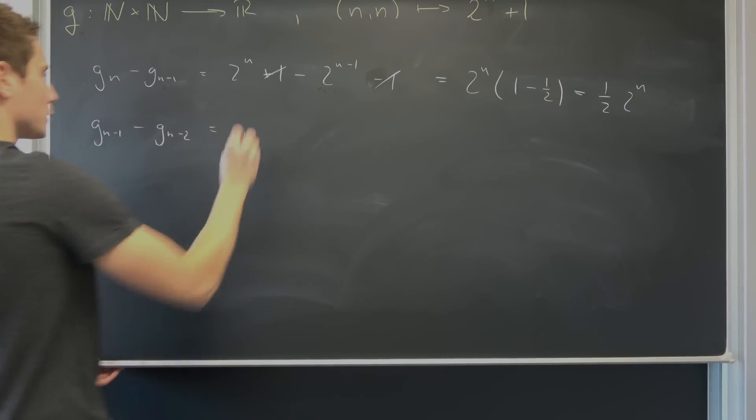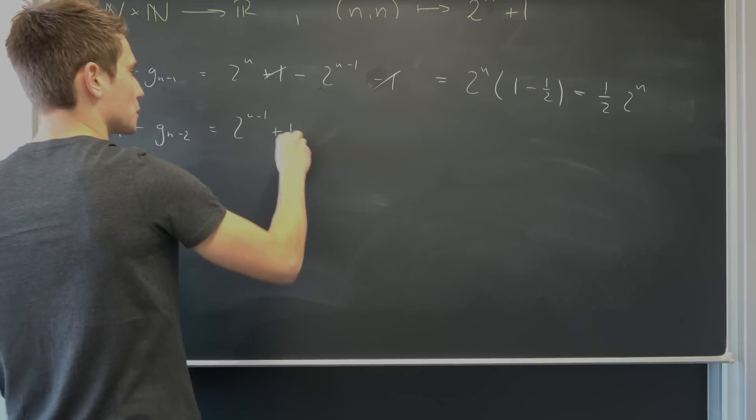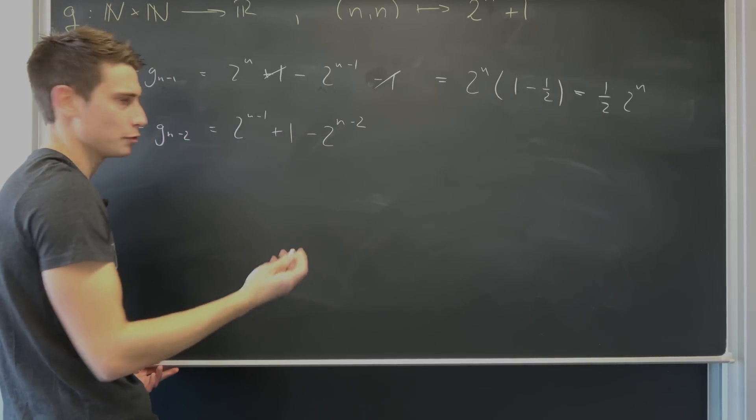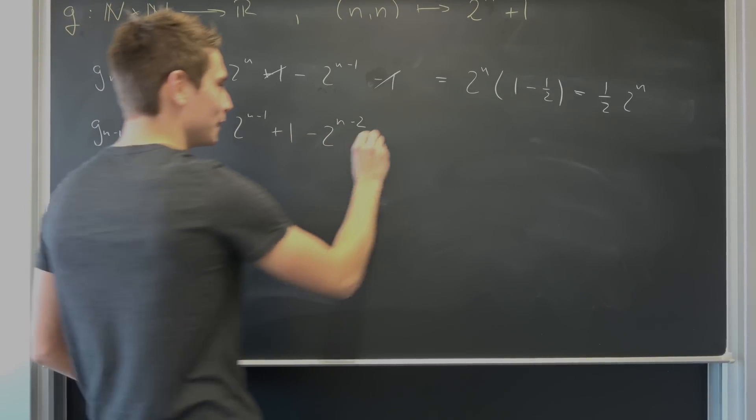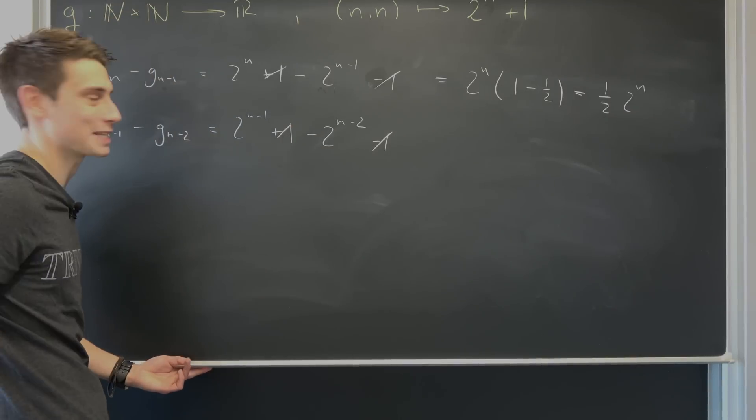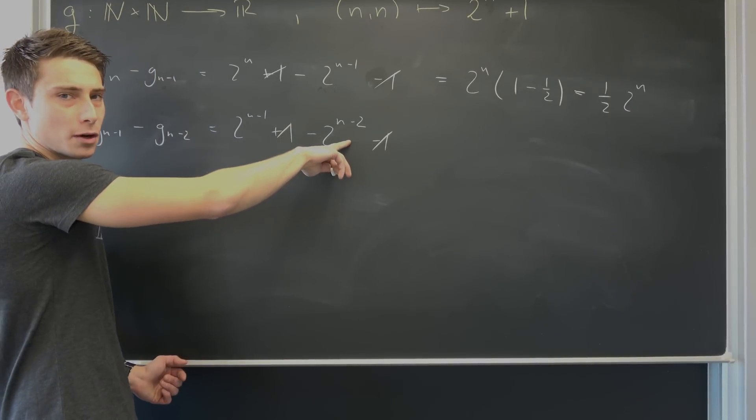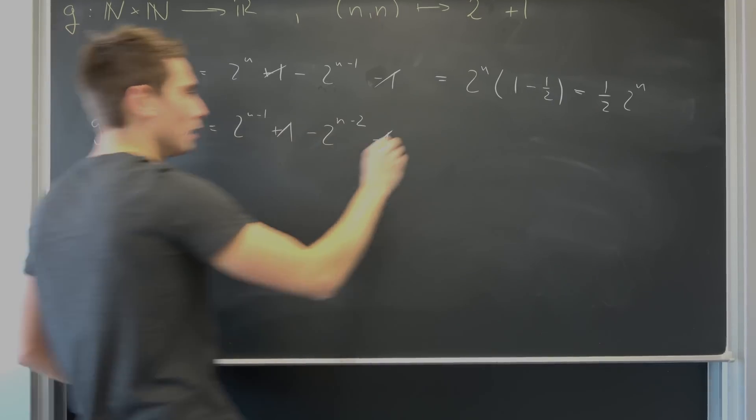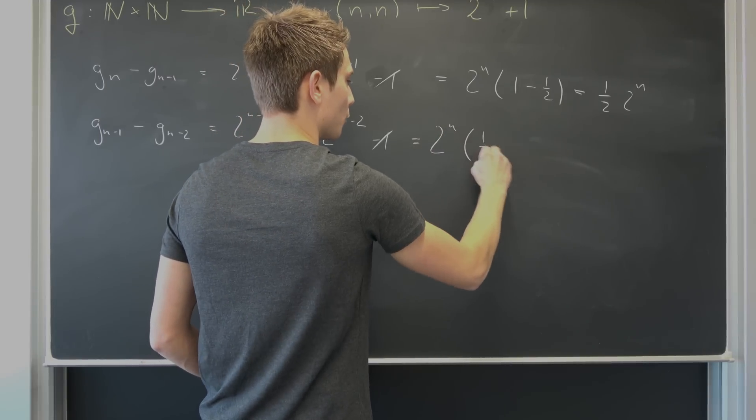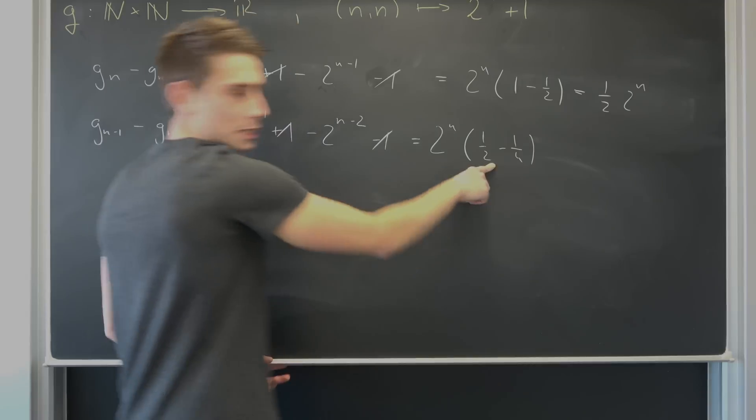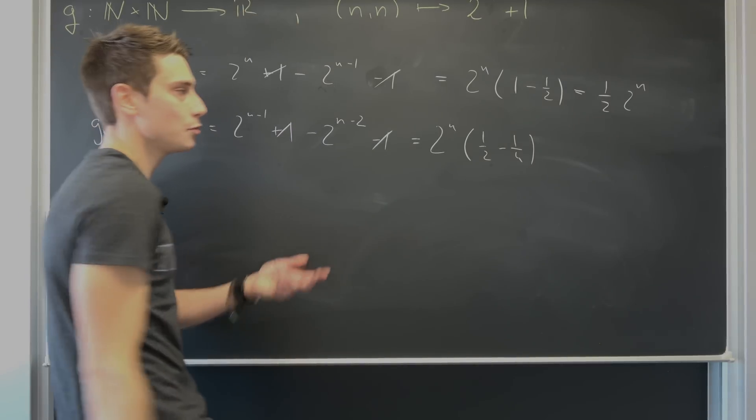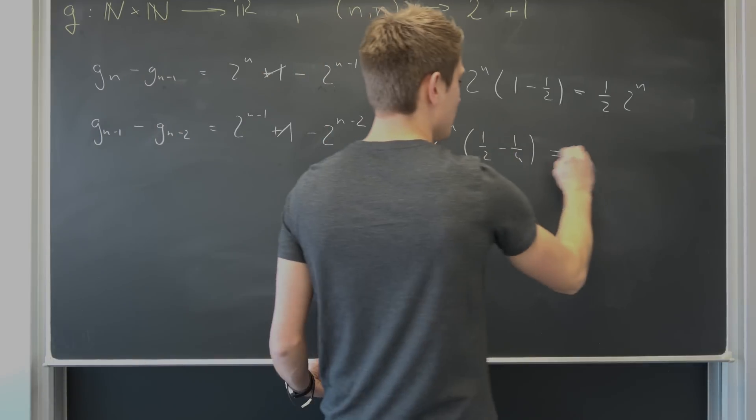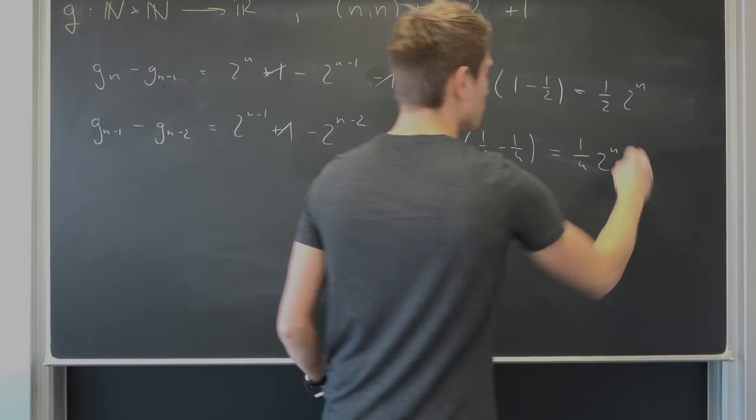This is going to result in basically 2^{n-1} + 1 minus 2^{n-2} minus 1. This and that is going to cancel out once again. This is nothing but 1/4 times 2^n and this is 1/2 times 2^n. So 2^n times (1/2 minus 1/4). You can advance this fraction by 2/2 to get a result of 1/4 in the end. So this is 1/4 times 2^n.